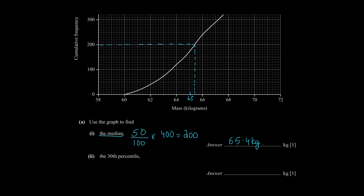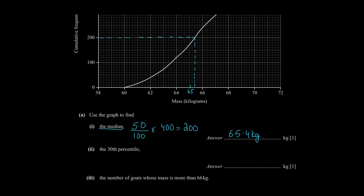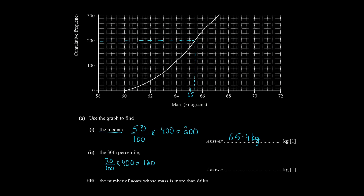Then we have to find the 30th percentile. The 30th percentile is basically trying to find out where 30% of the data lies. So 30% of the total frequency — we will calculate 30% of 400. So 30% of 400 is 120.